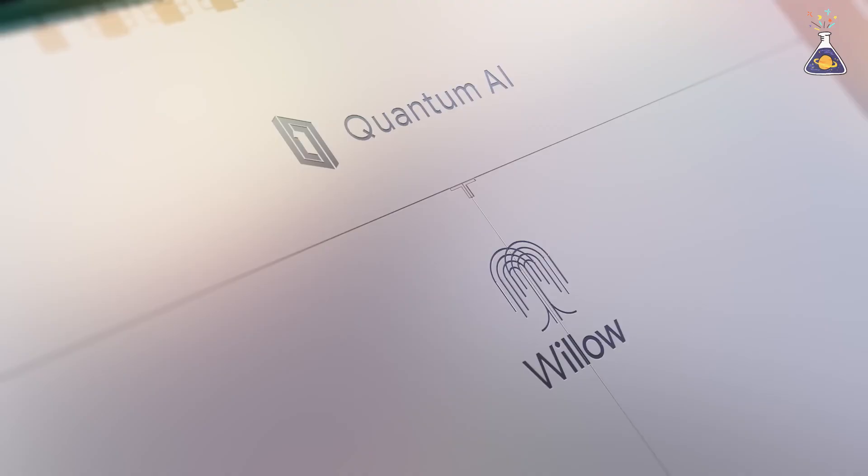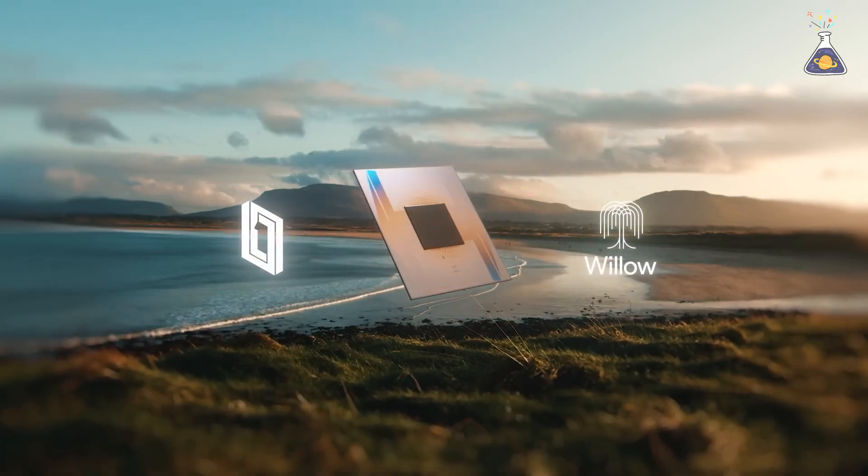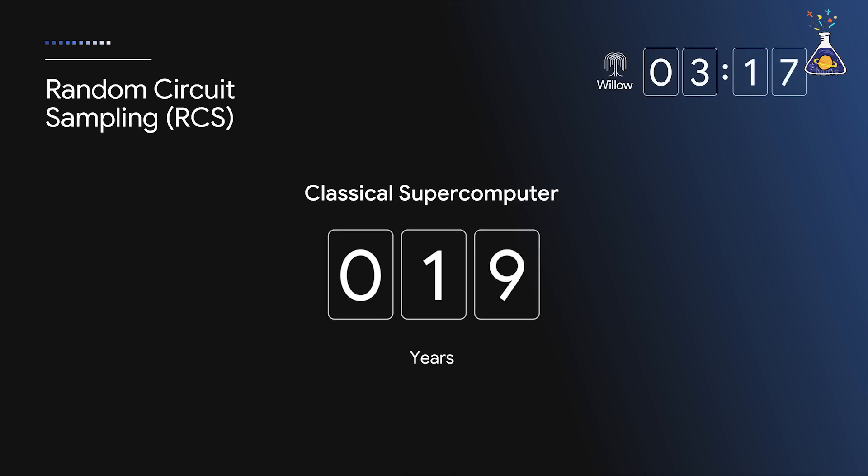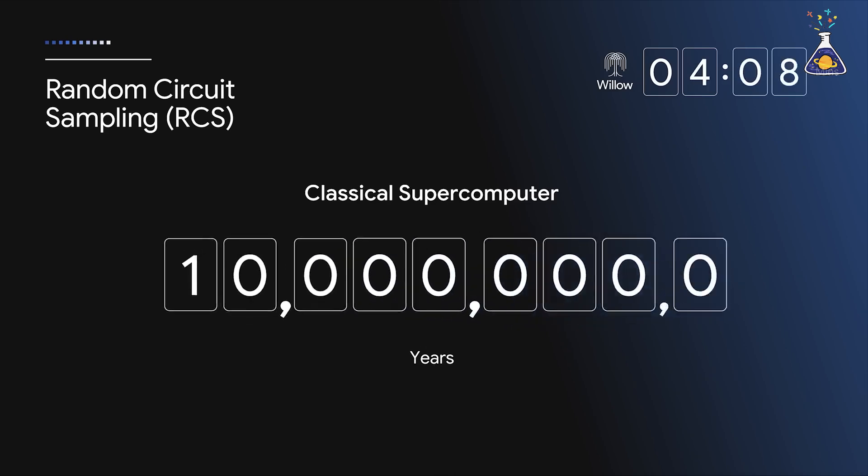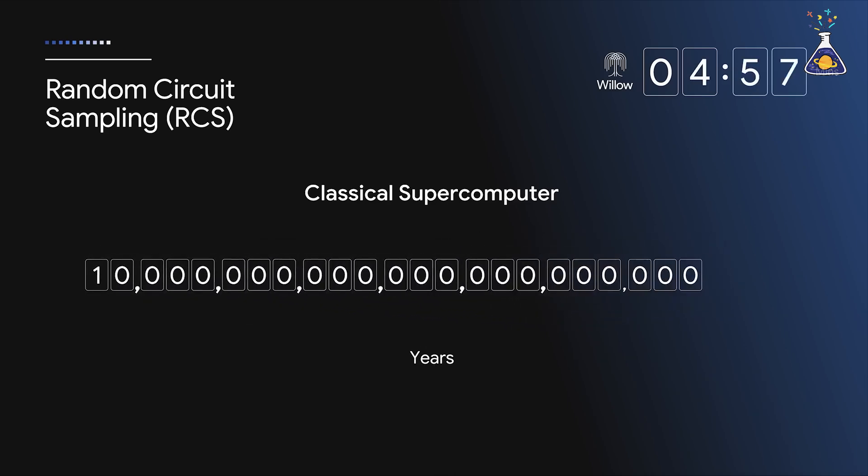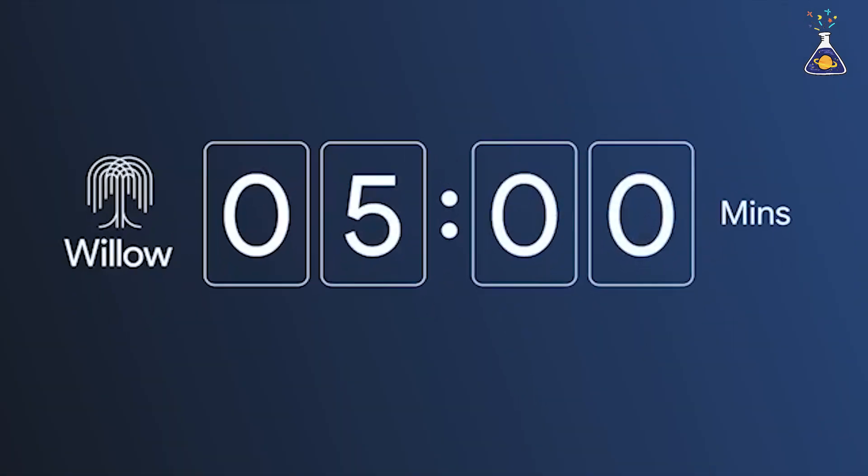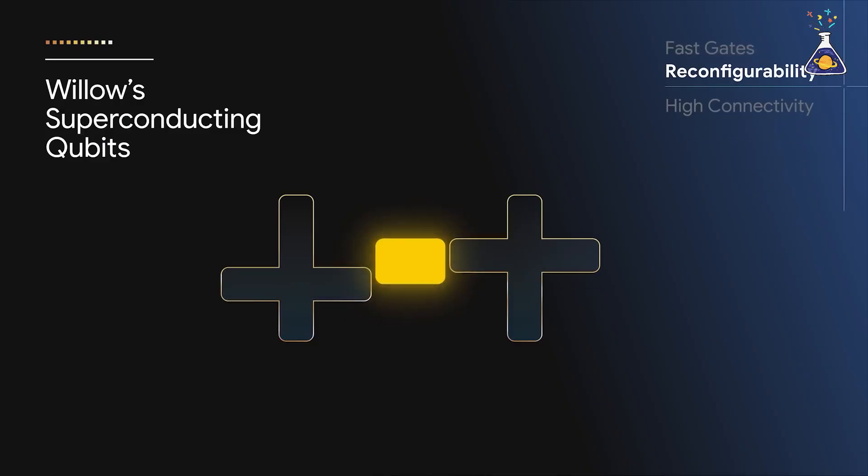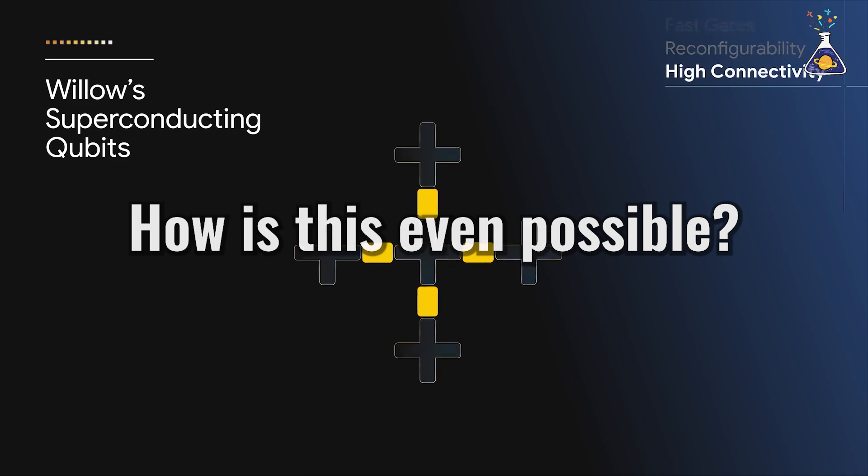In December 2024, Google unveiled a quantum processor named Willow. Willow's sudden arrival shocked everyone. Google announced that calculations which would take conventional supercomputers 10 to the power of 24 years could be solved by Willow in just 5 minutes. That's an unimaginably fast speed. But how is this even possible?